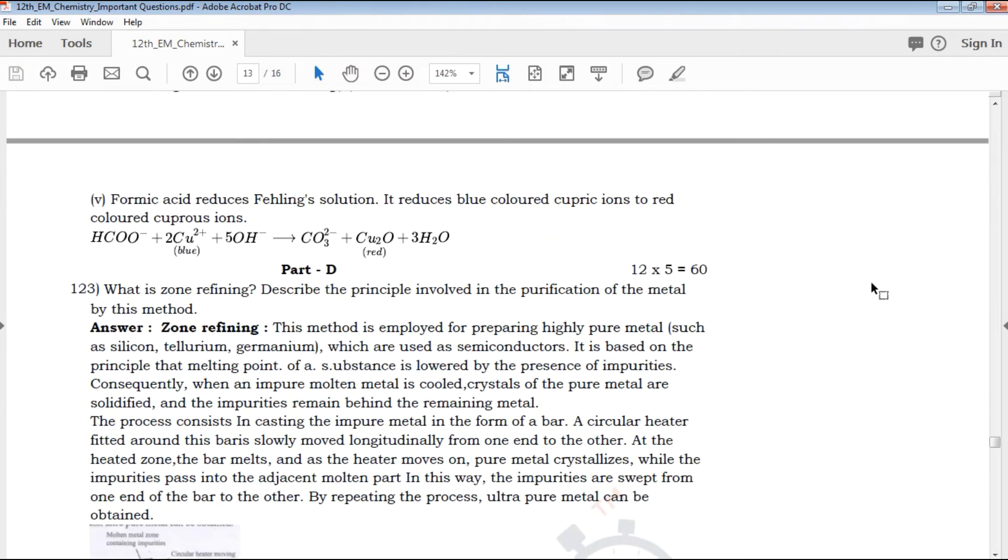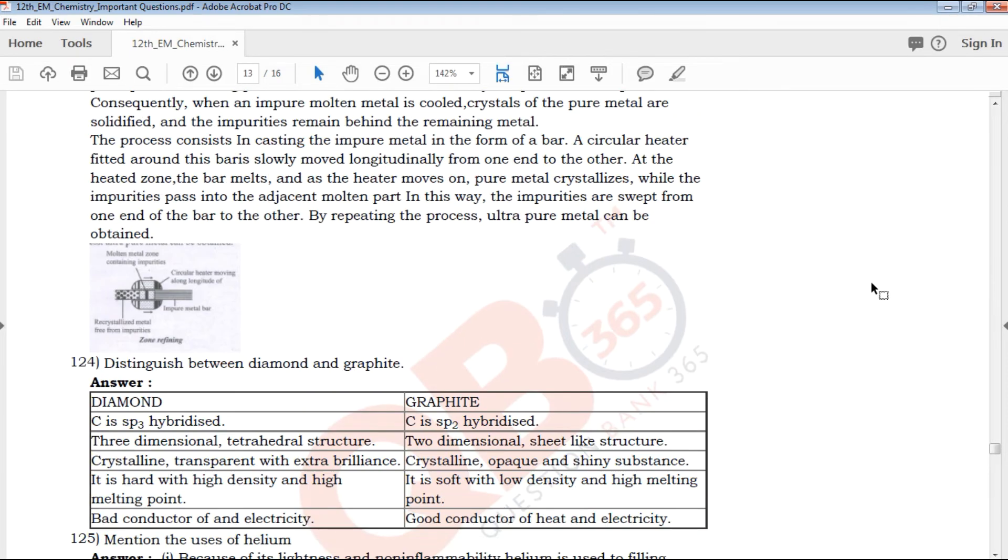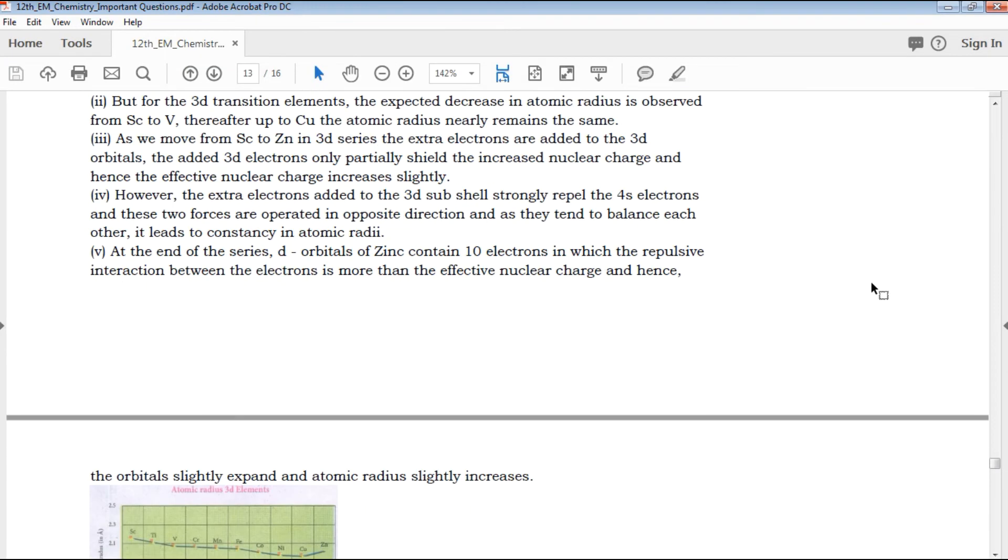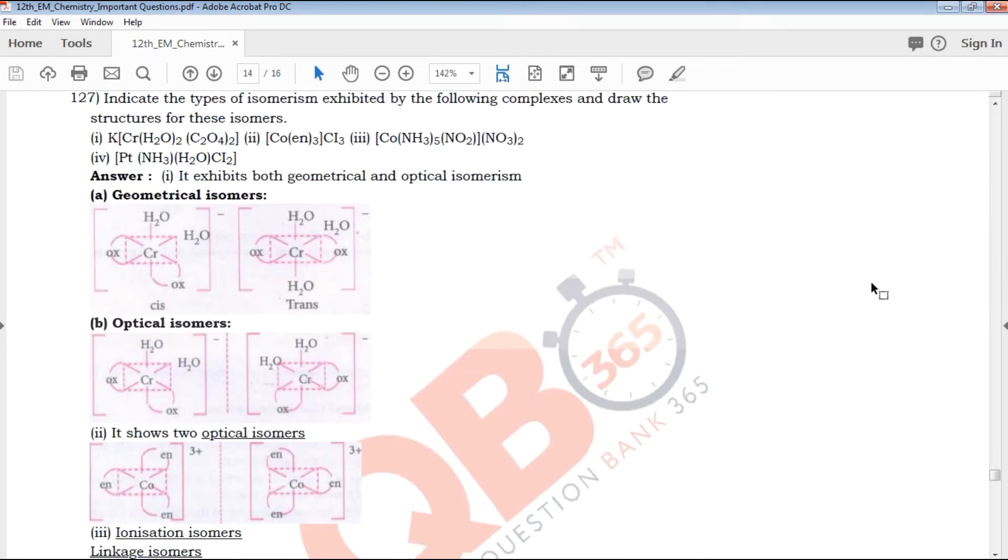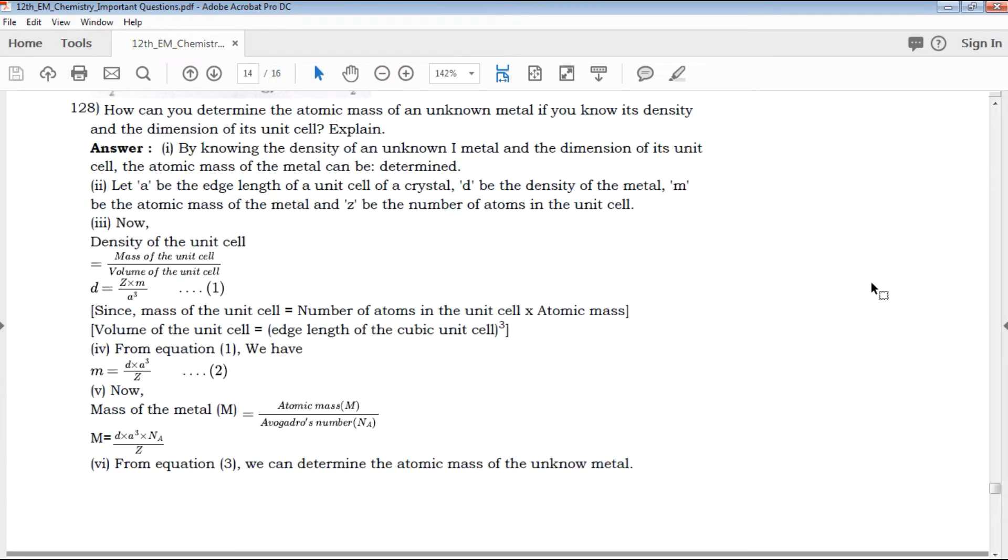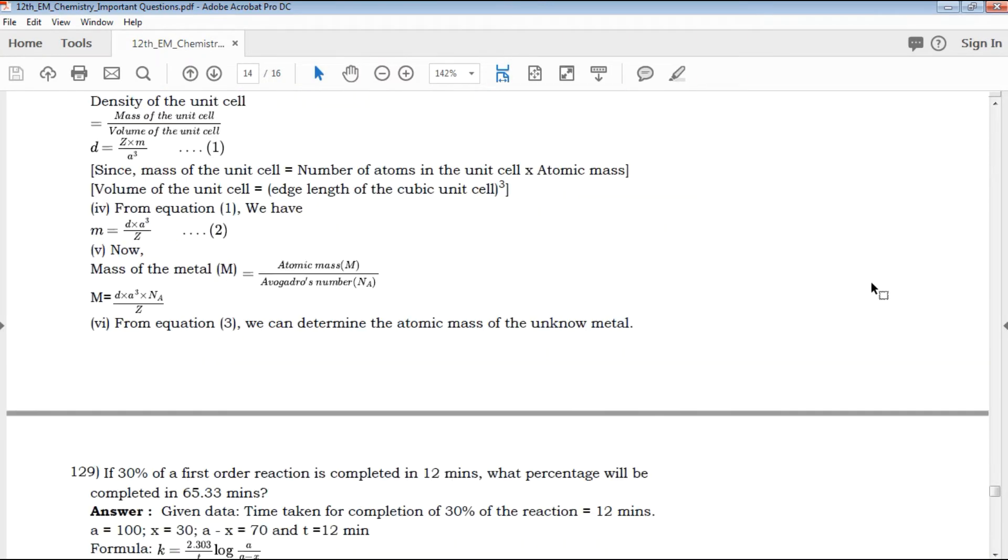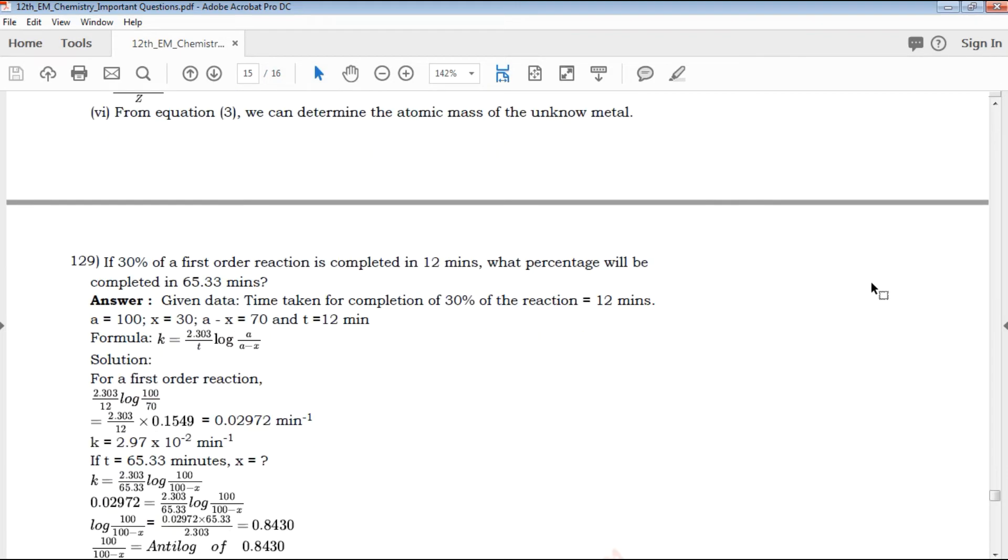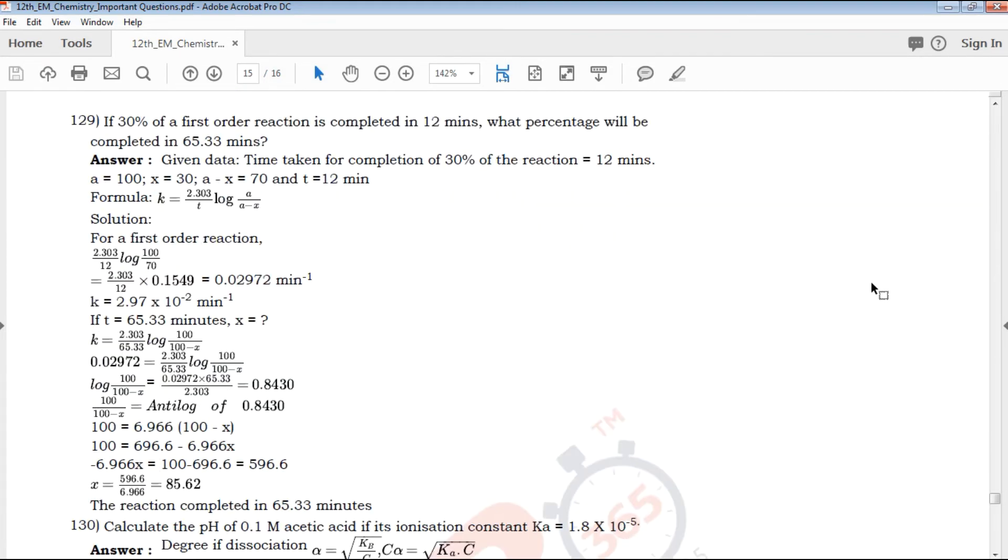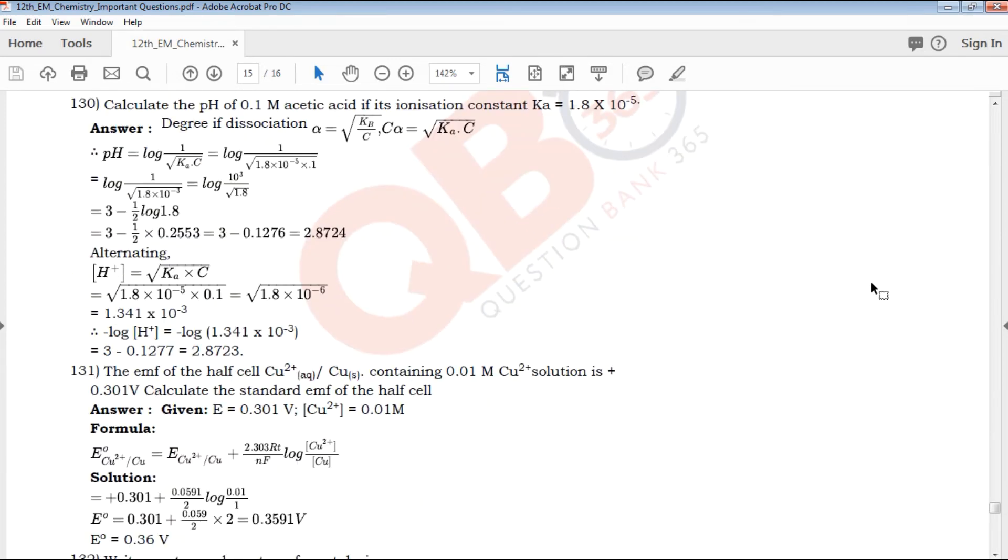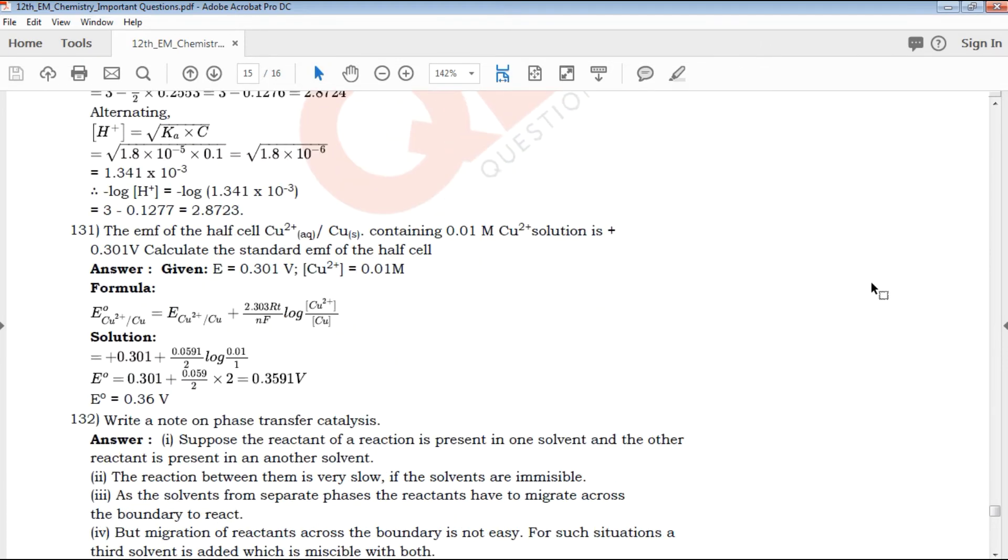Next we have Part D, 12 five-mark questions with clear explanation by heading and point-wise structure. If you look at it point-wise, it will be easy and understandable. If you represent the exam point-wise, it will be clear and you will get the exact marks you need.